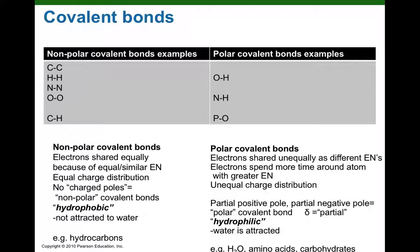Then if we have two atom partners involved in a covalent bond and there's a significant difference in the electronegativity of the two partners, then we're going to form a polar covalent bond. The atom partner with a higher electronegativity will have a partial negative charge, and the atom partner with a lower electronegativity is going to have a partial positive charge — and thus that will be called a polar covalent bond.